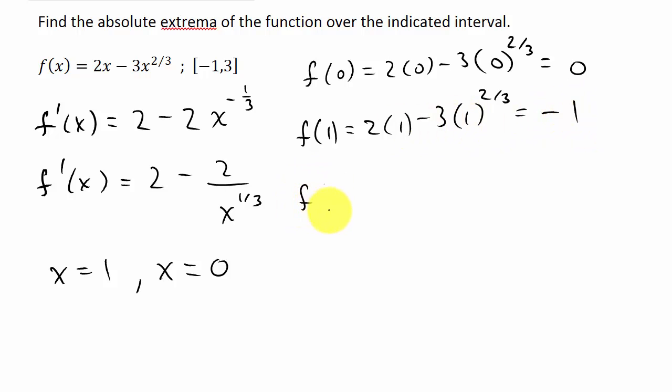And then f(-1) is going to be 2 times negative 1 minus 3 times negative 1 to the 2/3. So that'll be negative 2. This will be negative 3 because when we cube root negative 1, that's negative 1, square it and you get positive 1. So this is going to be negative 5.